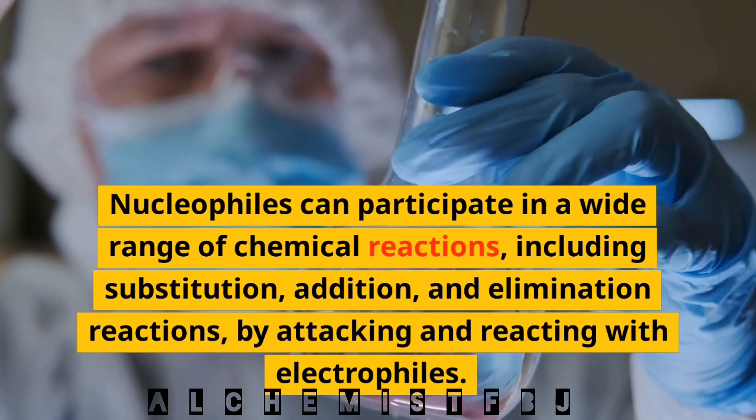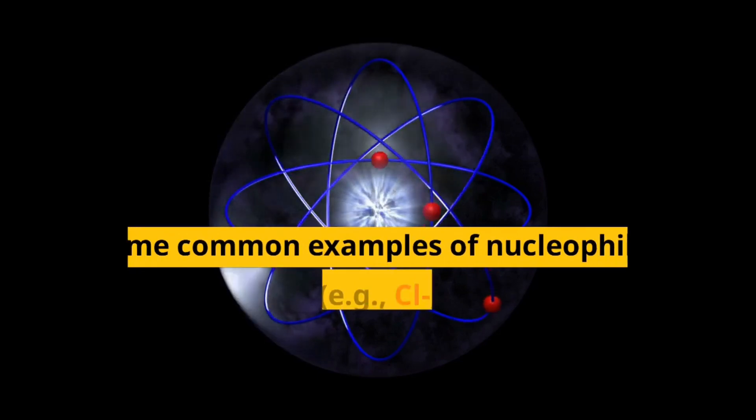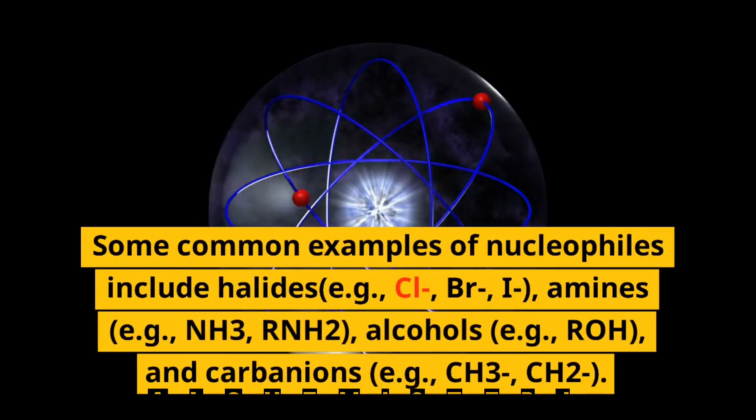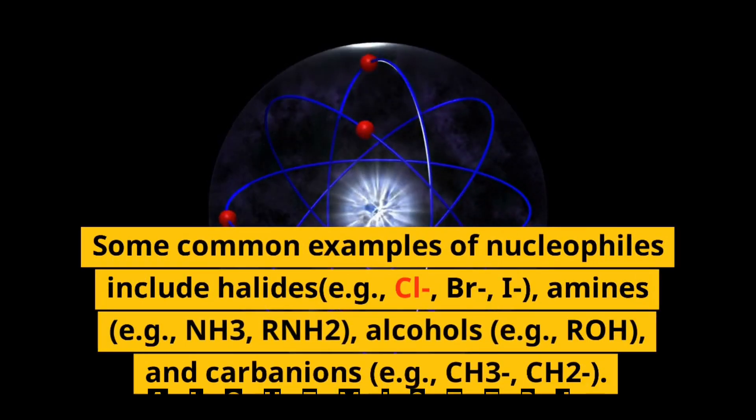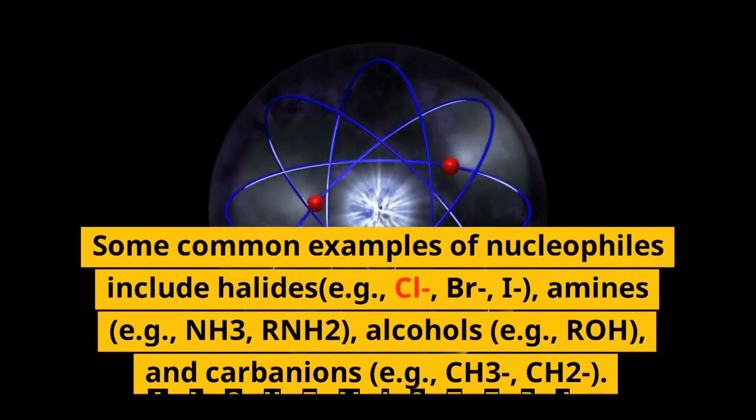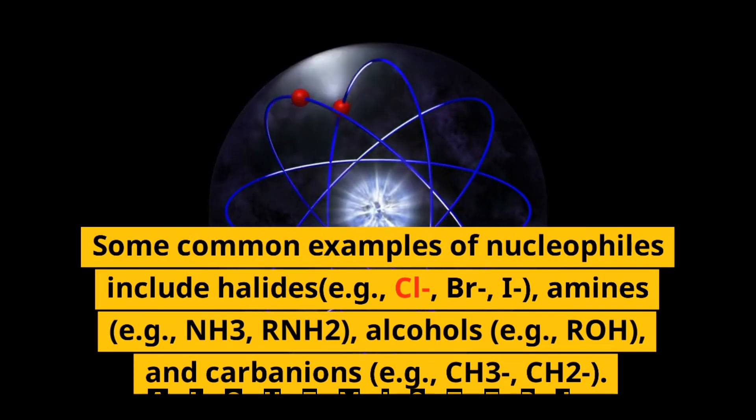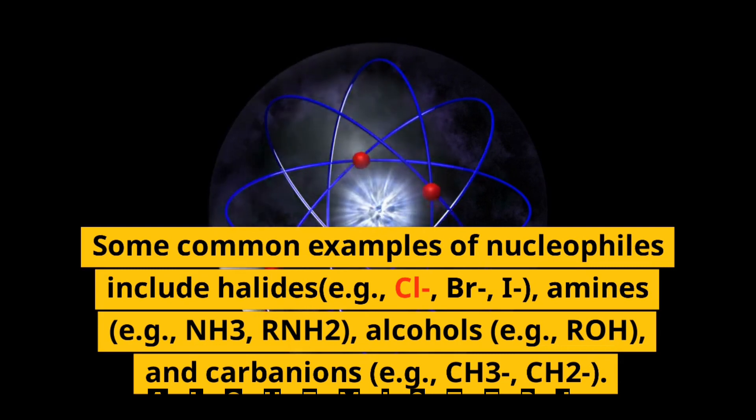by attacking and reacting with electrophiles. Some common examples of nucleophiles include halides (e.g., Cl-, Br-, I-), amines (e.g., NH3, RNH2),